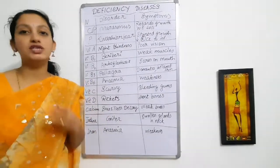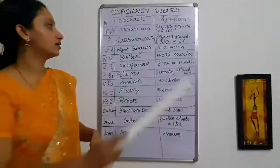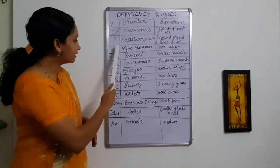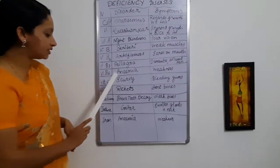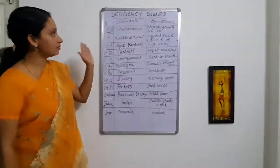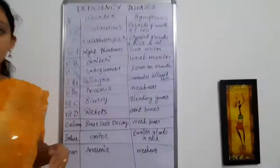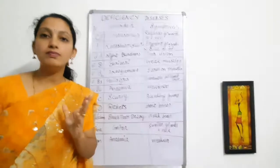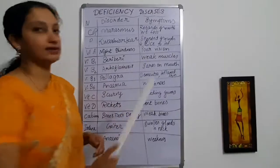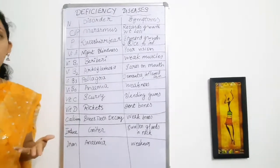Next is vitamins. Vitamin A, B1, B2, B3, B6 — I have listed a few vitamins and their deficiency diseases. Vitamin A deficiency causes night blindness, meaning there is a problem seeing things during night, or poor vision. Not being able to see things properly is one of the symptoms of night blindness.